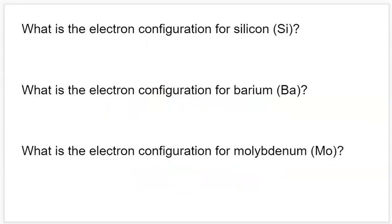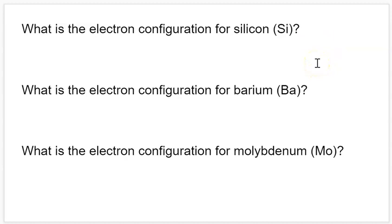Let's do some practice. Try to figure out the electron configurations for silicon, barium, and molybdenum. My big tip: consider what the last bit of the configuration is going to be, then fill everything in before that. For silicon — it's in the p block, third row — so its last electron is in a 3p subshell, and it's the second element in that row's p block, so it ends in 3p2. Then you can assume all previous subshells are full. Pause the video and try these on your own.